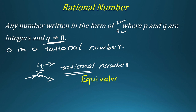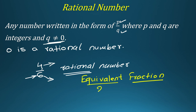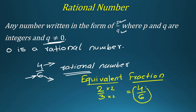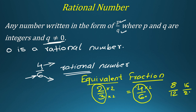Such fractions are called equivalent fractions. An equivalent fraction is a fraction or rational number whose value is the same as another number. For example, if you take 2 over 3 and multiply numerator and denominator by 2, you get 4 over 6. You can also get 8 over 12 by multiplying again by 2, and 16 over 24 as well. All these fractions are equivalent fractions.